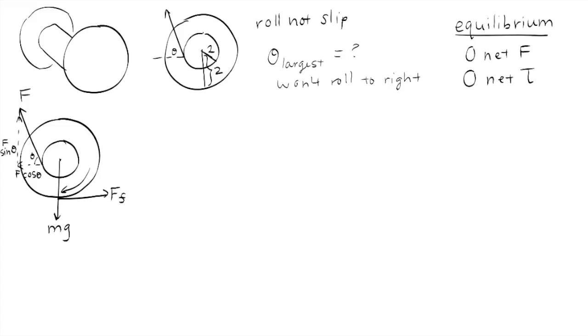So now we can start writing our equations. So let's deal with torque first. Torque is equal to R cross F. Or in other words, R times F times sine of alpha, or the angle between these two vectors.